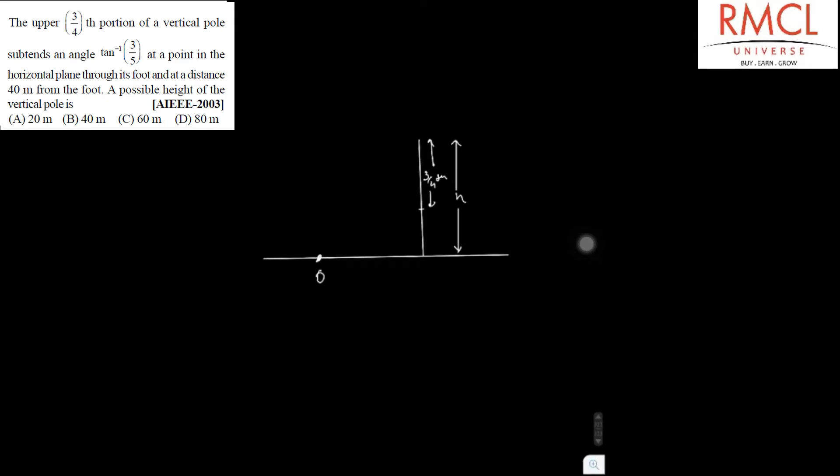And its portion of this pole is subtending an angle tan inverse 3 by 5. So suppose this is theta 2 and this is theta 1 and it is given that the tan of theta 2 is equal to 3 by 5. And this remaining portion will be h by 4.